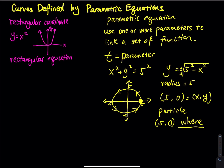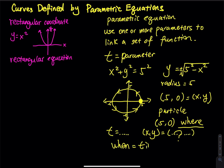But one thing it doesn't tell you is when the object was at a given point. When time equals some value, we don't know what x and y are. So it doesn't tell you when the object was at a given point (x, y). That 'when' is time, and we call this the parameter t.